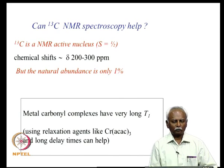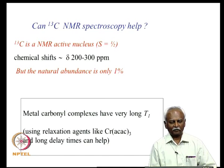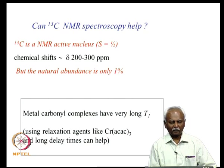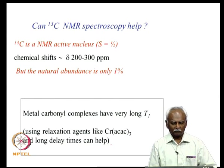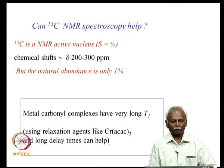Carbon monoxide complexes can also be studied using ¹³C NMR spectroscopy. The difficulty is that the natural abundance of carbon-13 is only about 1%, and since carbon is not a very sensitive nucleus, the carbonyl carbon signals tend to be very weak. External relaxation agents are usually added to the sample so that reasonable signals for the carbonyl carbon can be obtained.